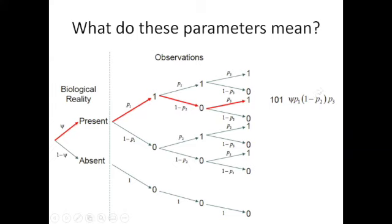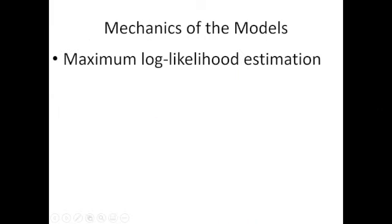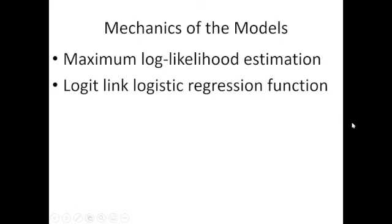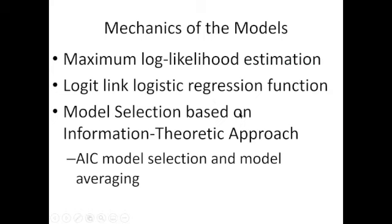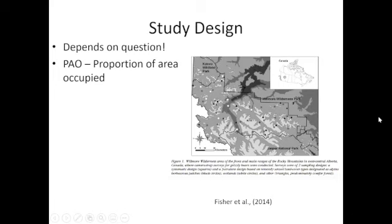The mechanics of the model use maximum log-likelihood estimation — a typical frequentist approach. We use a logit link because it's logistic regression; the output is binary (zero or one). Model selection is based on information theory using AIC, and we can perform model averaging across multiple top competing models.